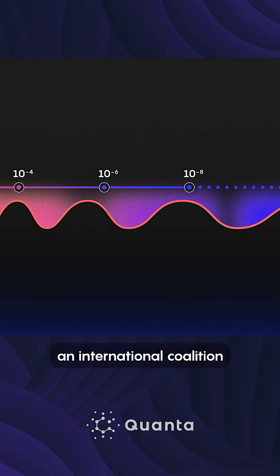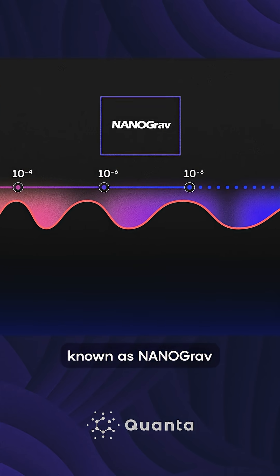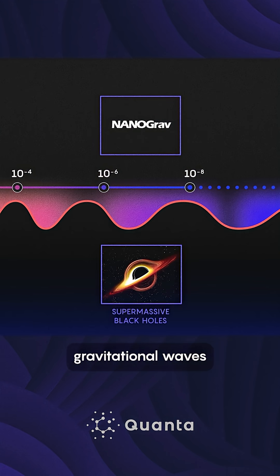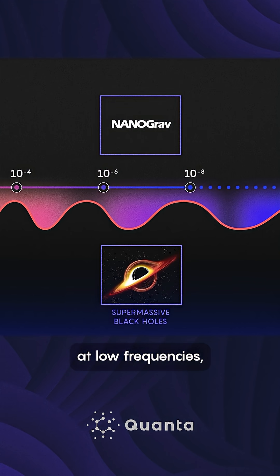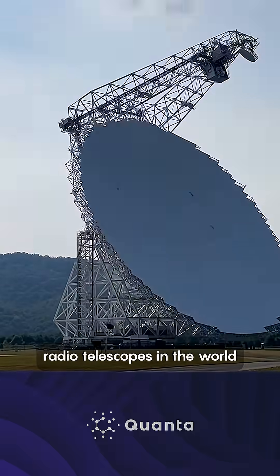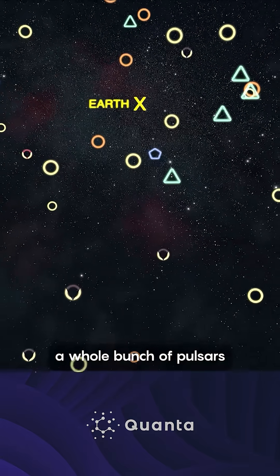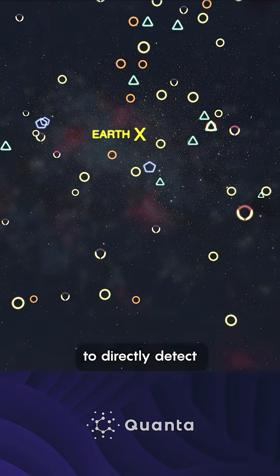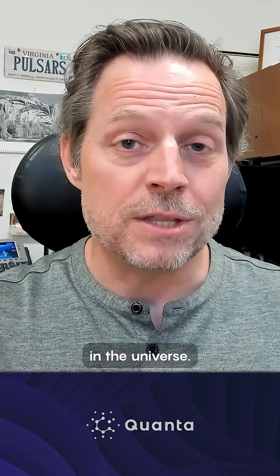For 15 years, an international coalition known as Nanograv has been trying to detect gravitational waves at low frequencies, using a technique called a pulsar timing array. We use some of the largest radio telescopes in the world to measure a whole bunch of pulsars, and hopefully to directly detect gravitational waves in the universe.